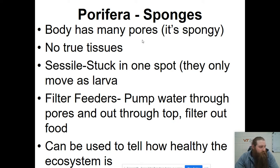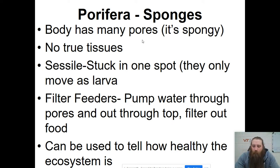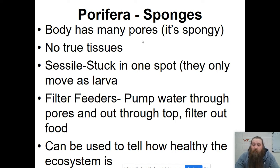They are filter feeders. They pump water in through the pores at the bottom and it goes out the top of the sponge through that hole at the top. As they pump the water through their cells, they filter out the food. Sponges are pretty sensitive organisms, so if you see a bunch of sponges in an area, that's a good indication that the ecosystem is pretty healthy.